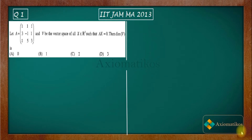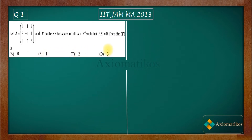Hello dear students, welcome to Exhumatic. This video is part of the solution series for IIT JAM 2013. We have a problem from linear algebra: let A be a matrix and V be the vector space of all x belonging to R³ such that Ax = 0. We need to find the dimension of V from the four given options.